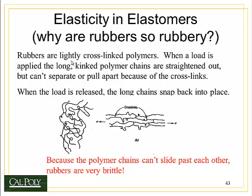Now you might ask yourself, why are rubber bands so rubbery? Why can I stretch them so far and return them elastically? That has to do with a special kind of bond called a cross-link. A cross-link is where we have covalent bonds that connect one long polymer chain to another long polymer chain. You can see in this picture little linkages between the long chains — here and here, and here's another one down here. As I apply a stress to these molecules, the molecules line themselves up with the direction of the stress, but the cross-links prevent the chains from sliding past one another. Therefore, I can stretch a rubber band long distances without it snapping, but once I get to the point where I'm pulling on the cross-links, it becomes very difficult to continue stretching that material. This is why polymer chains can't slide past each other, making rubbers very elastic but not very ductile.